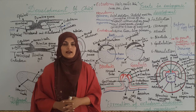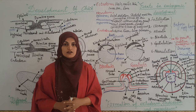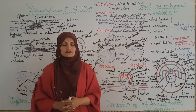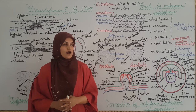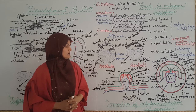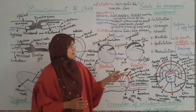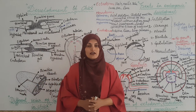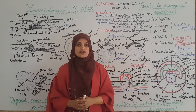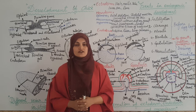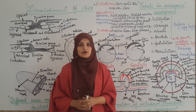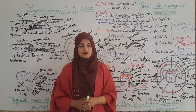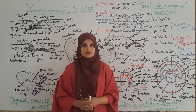I hope you got an idea about the formation of three germ layers — ectoderm, mesoderm, and endoderm — as well as the process of gastrulation and the organs formed by these layers. In the next lecture we will study about neurulation and how the nervous system is formed in the embryo. Thank you.